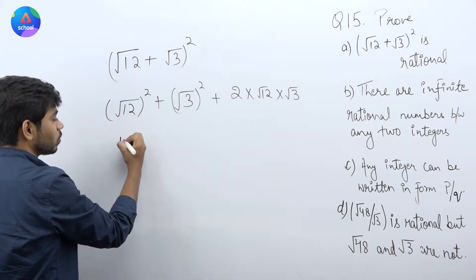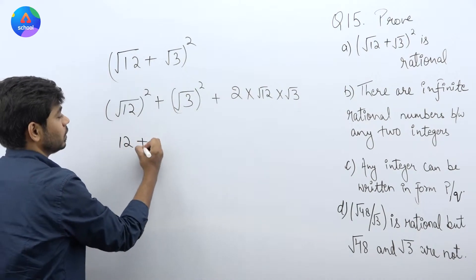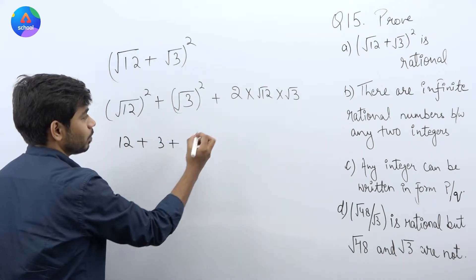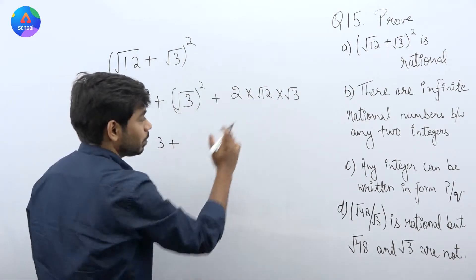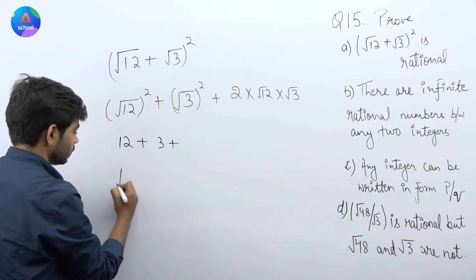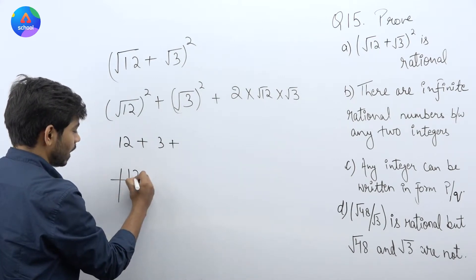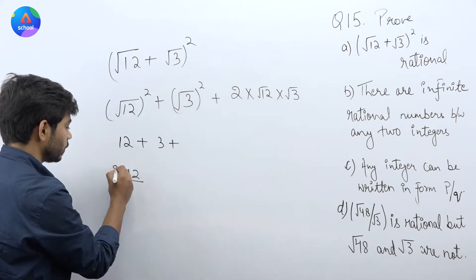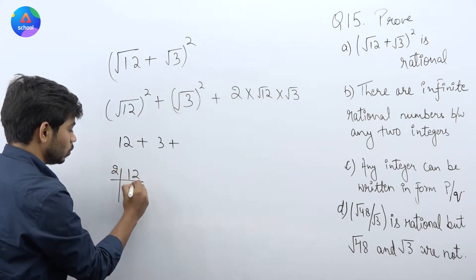√12 का square होता है 12, और √3 का square होता है 3. अब 2√12 · √3 की बात करें — इसके लिए 12 का prime factorization करते हैं: 2, फिर 6।